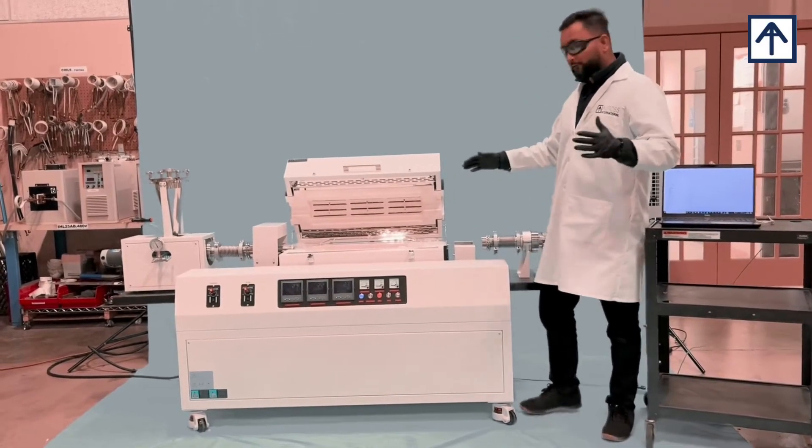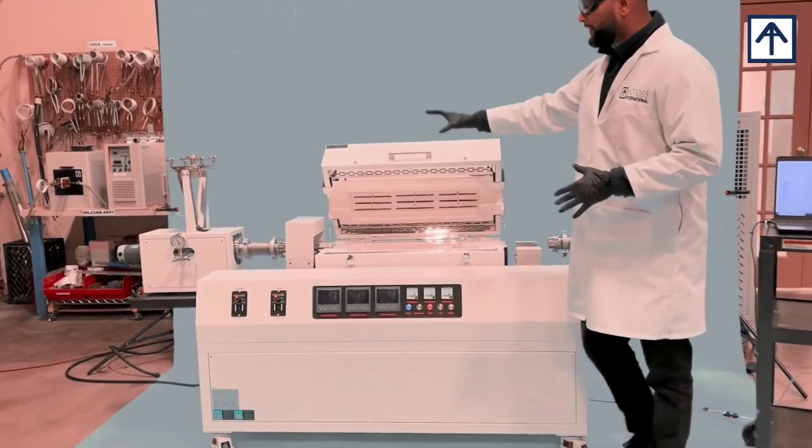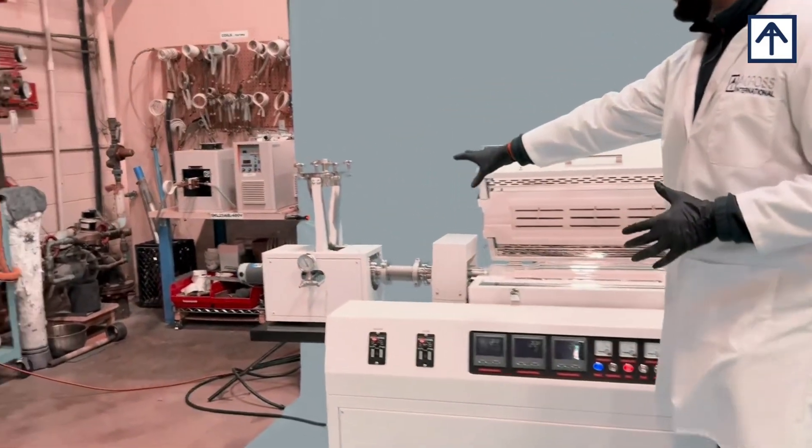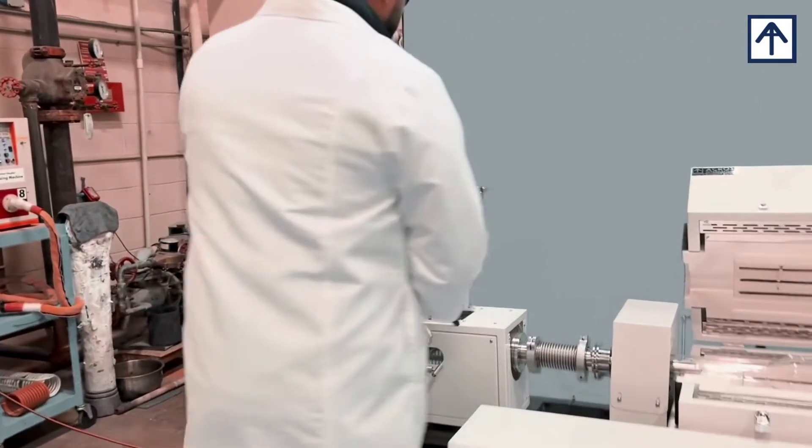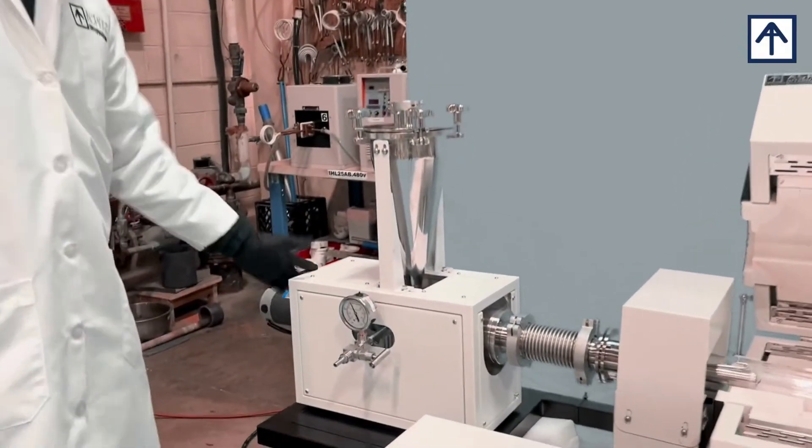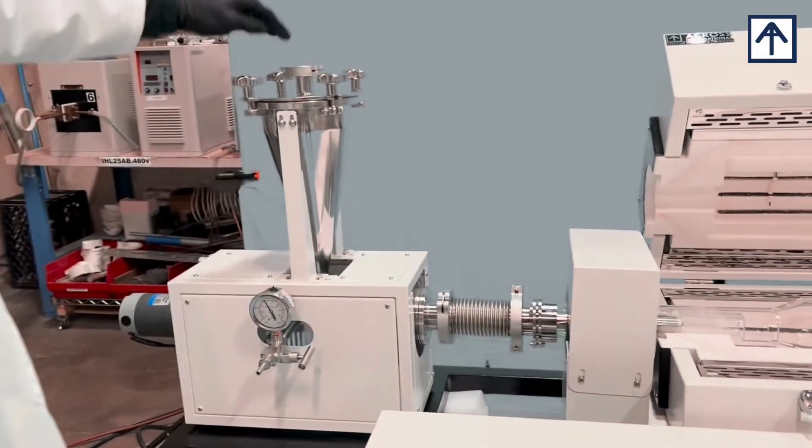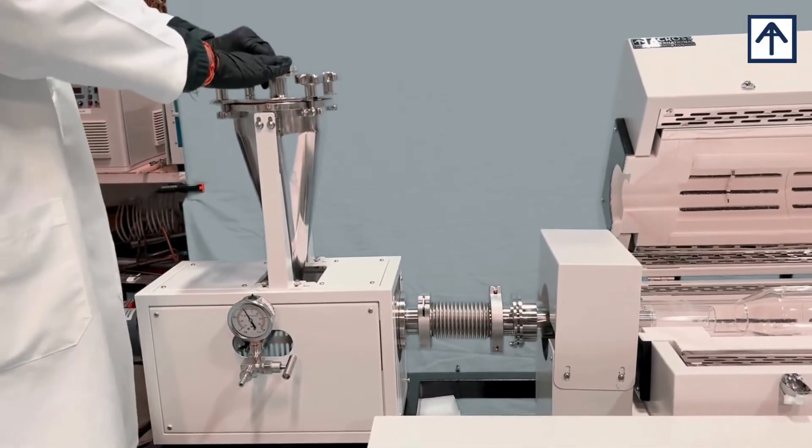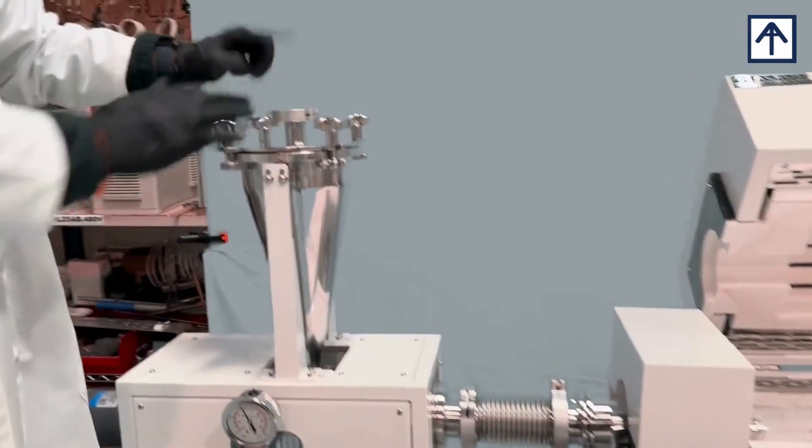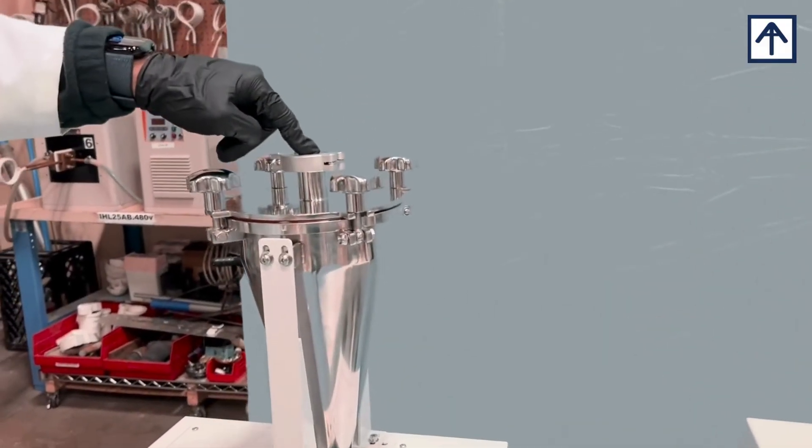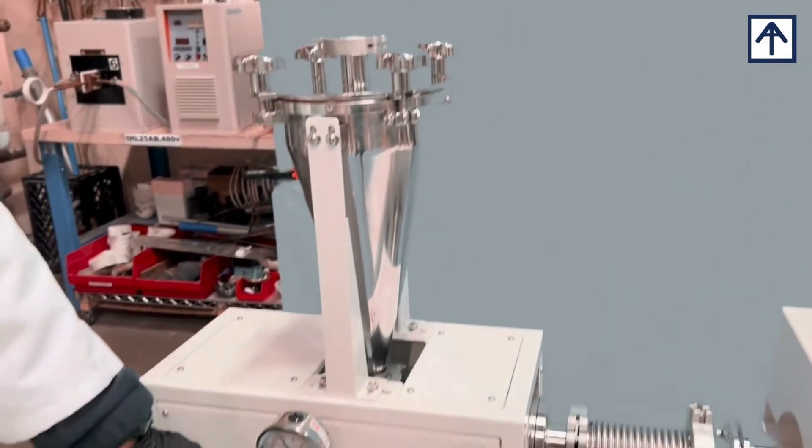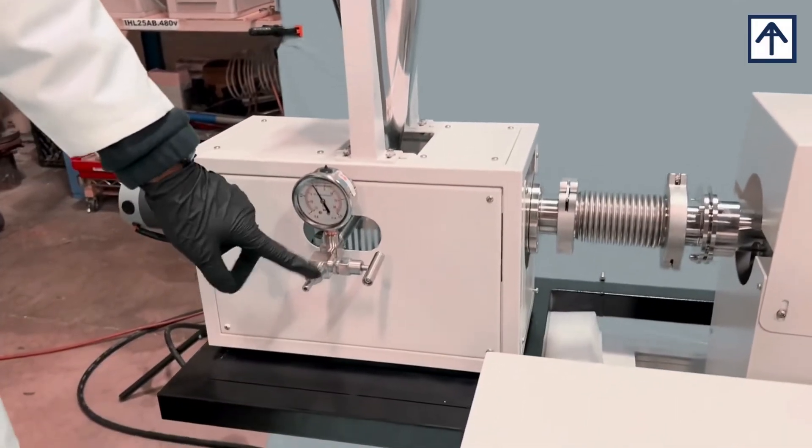If you come closer and take a look, we have the main auger and feeder right here, which normally pushes material inside. You can also feed from here. There's a possibility of vacuum feeding if necessary. We have a vacuum KF-25 port right here, and this is your gas injection port so you can introduce inert gases into the atmosphere if needed.